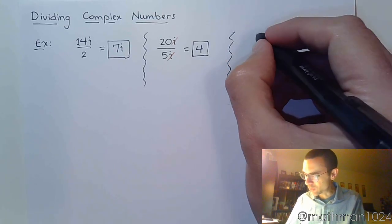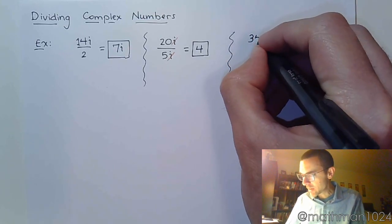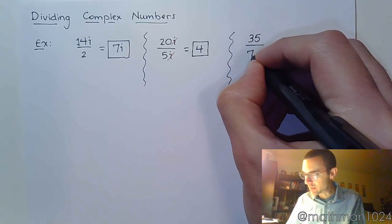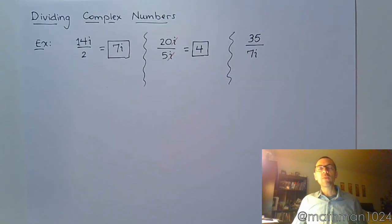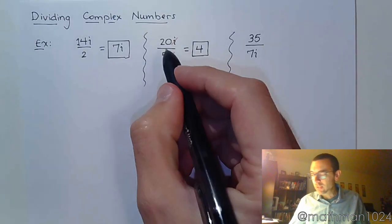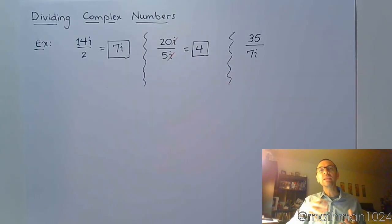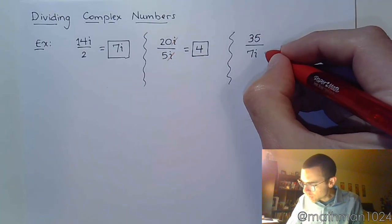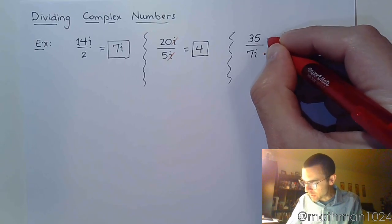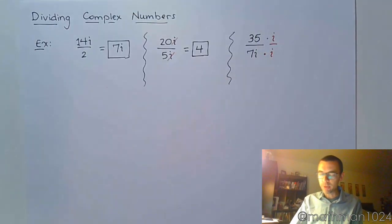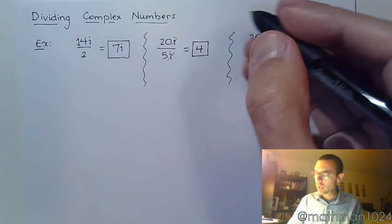It's the next guy that gets kind of weird. If I take 35 divided by 7i. Now we have a problem because i is in the denominator, and unlike the last example, there's nothing in the numerator for it to reduce with. And you're not supposed to leave anything imaginary in your denominator. So, we just do a slight little correction here.